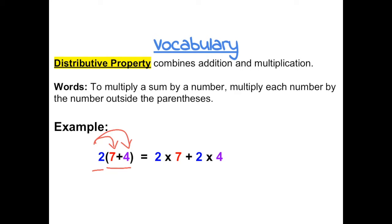For example, the number 2 is being multiplied to the sum of 7 plus 4. You can think of it as you being the number 2 and you're going to visit your friend's house. And inside your friend's house, you have two friends there.